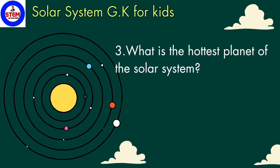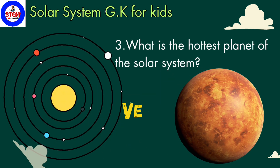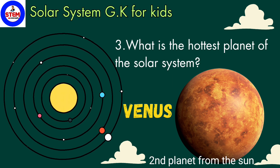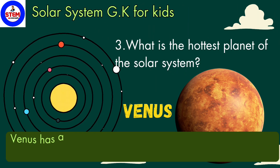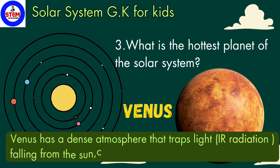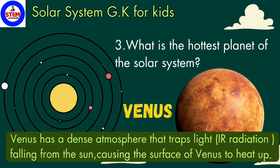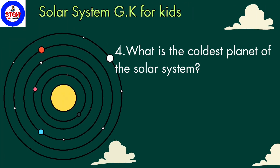Third question: what is the hottest planet of the solar system? The answer is Venus — Venus is the hottest planet of the solar system. Do you know, students, Venus has a dense atmosphere that traps infrared radiation falling from the sun, which causes the surface of Venus to heat up.